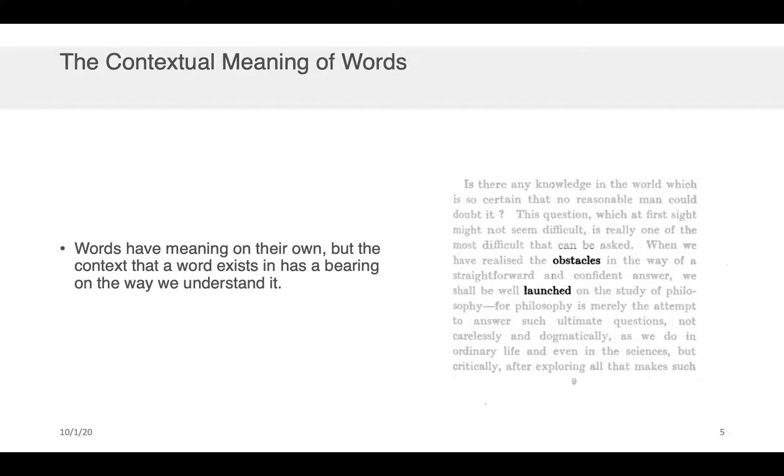In isolation, there is a particular way that we might imagine what the obstacle is or what the word launched is. Launched, for example, might refer to a rocket going to outer space. Obstacles might be a track that we're running, and we want to jump over these things that are called obstacles. But as soon as I have access to some of the context, for example, obstacles in the way of a straightforward and confident answer, I understand that these obstacles are no longer physical. They're referring to something in the domain of logic or argumentation. That is to say that knowing the context that a word appears in has a big consequence for the way that we interpret the meaning of that word.